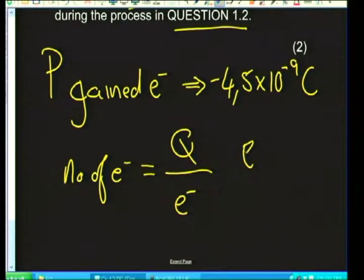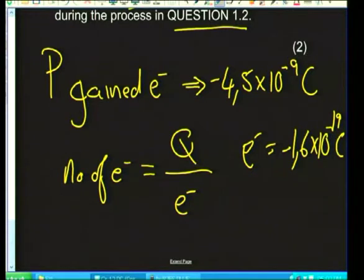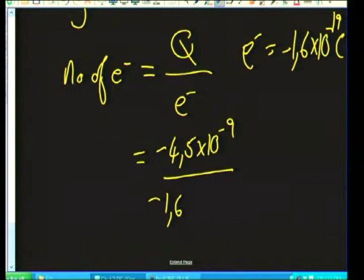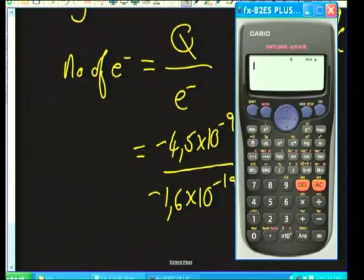This was discovered by Millikan in the Millikan oil drop experiment. He found the charge on an electron is −1.6×10⁻¹⁹ coulombs — it's on your data sheet. This tells you that the coulomb is an incredibly big unit; the charge on an electron is very, very small. Let's substitute in: (−4.5×10⁻⁹) / (−1.6×10⁻¹⁹).